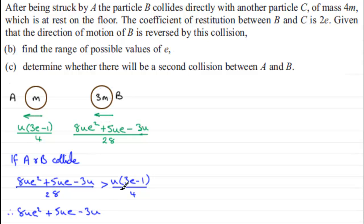And multiplying this side by 28, well, the 4 will go into 28 seven times, so you just get that this is greater than 7u multiplied by 3e minus 1.